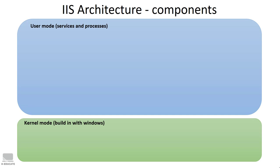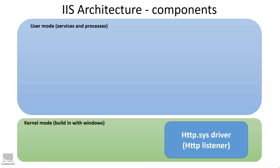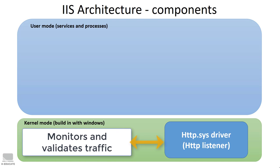The kernel mode is the component that is built in with Windows and comes with the operating system. The user mode is that collection of services and processes that you can manage in Task Manager, where they work on a user level. The main component of the kernel group is the HTTP driver or listener, which is responsible for monitoring and listening for HTTP traffic on the TCP layer and validating it.